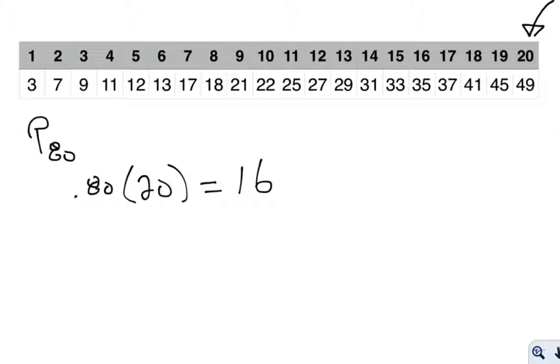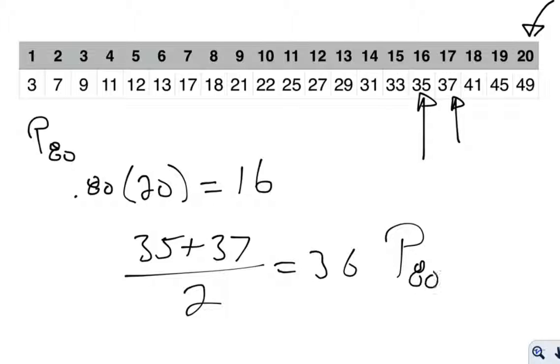What that's telling us to do is we need to take the value in the 16th position, which is 35, add it to the value in the 17th position, which is 37, divide it by 2, and you get 36. So what I would then report is that the 80th percentile is 36 for this data.